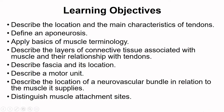Following this section, I'd like you to be able to describe the location and the main characteristics of tendons, define an aponeurosis, apply basics of muscle terminology, describe the layers of connective tissue associated with muscle and the relationship with tendons, describe fascia and its location, describe a motor unit, describe the location of a neurovascular bundle in relation to the muscle it supplies, and distinguish muscle attachment sites.